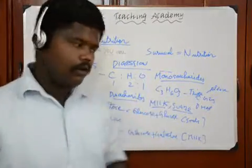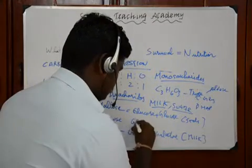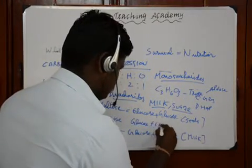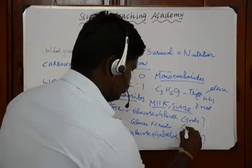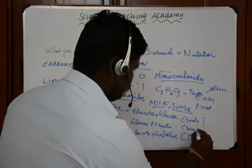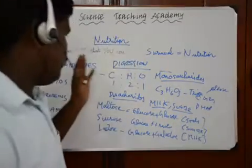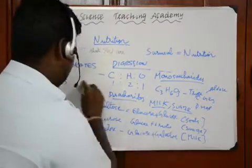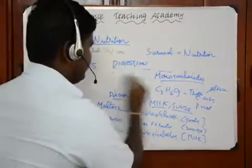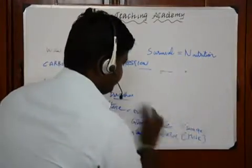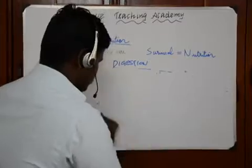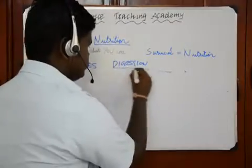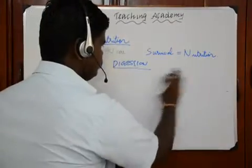Sucrose — if you have cane sugar, that is made up of sucrose. Sucrose is composed of two monomers: glucose and fructose. It is found in cane sugar. This is a general overview of disaccharides.